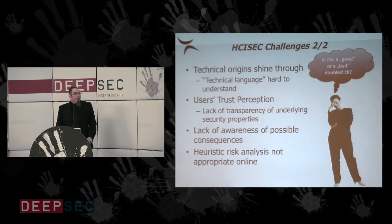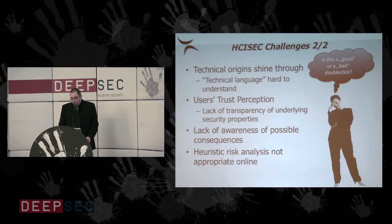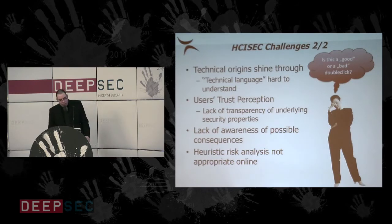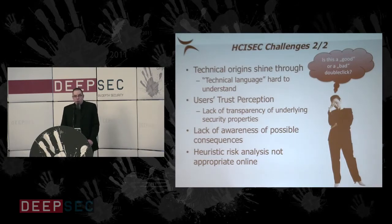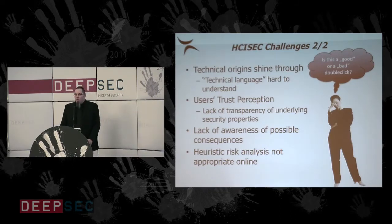We have a very big problem because of the lack of perceived possible consequences. Most users say: 'I have no money in my bank, why am I at risk?' Another big challenge is that we may think we are very rational when making decisions, but human risk analysis is actually heuristic — it was very appropriate to escape a sabre-toothed tiger in former times, but it might not be the appropriate approach for online security decisions.